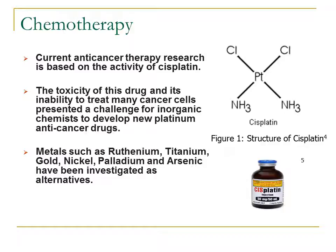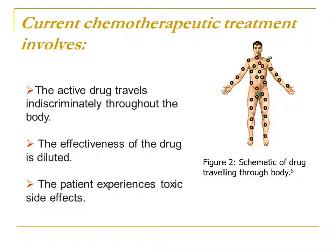In chemotherapy, current anti-cancer therapy research is based on the activity of cisplatin. The toxicity of this drug and its inability to treat many cancer cells presented a challenge for inorganic chemists to develop new platinum anti-cancer drugs. Metals such as ruthenium, titanium, gold, nickel, palladium, and arsenic have been investigated as alternatives. Cisplatin is used in the clinic to treat cancers; however, current chemotherapeutic treatment involves the active drug traveling indiscriminately throughout the body, diluting its effectiveness and causing the patient to experience toxic side effects.